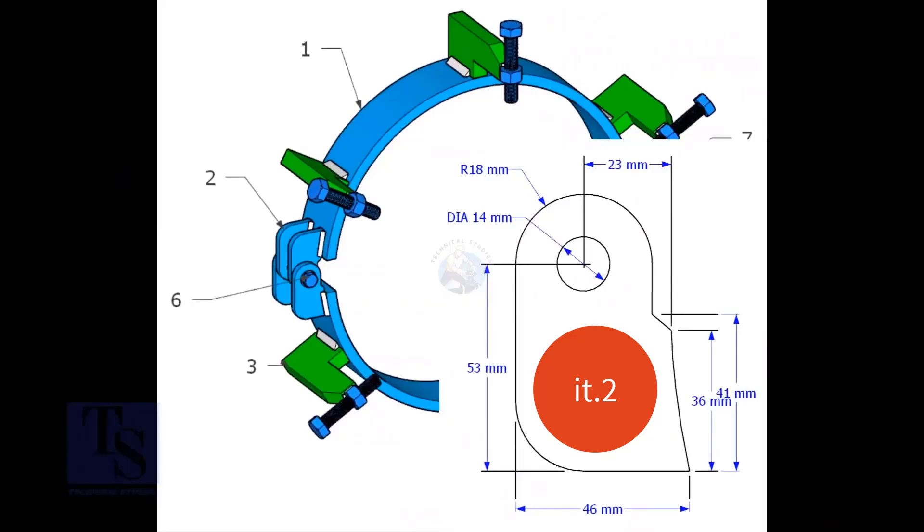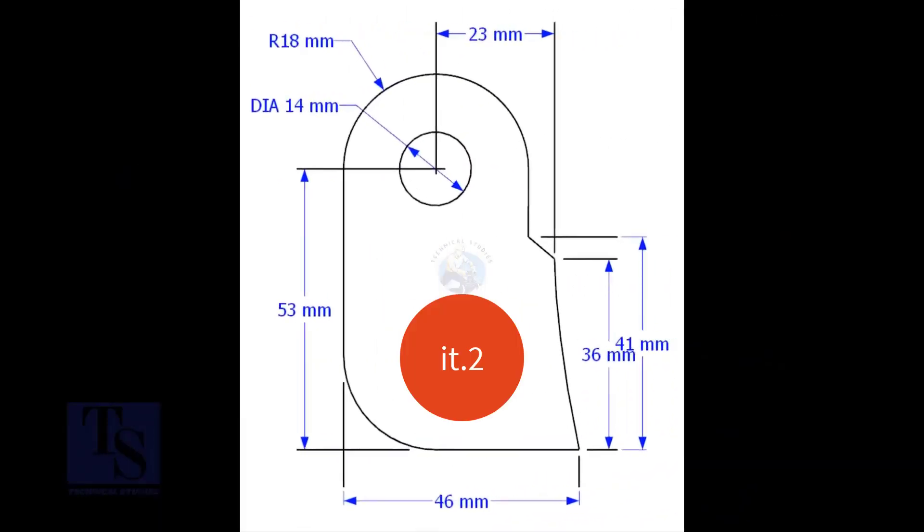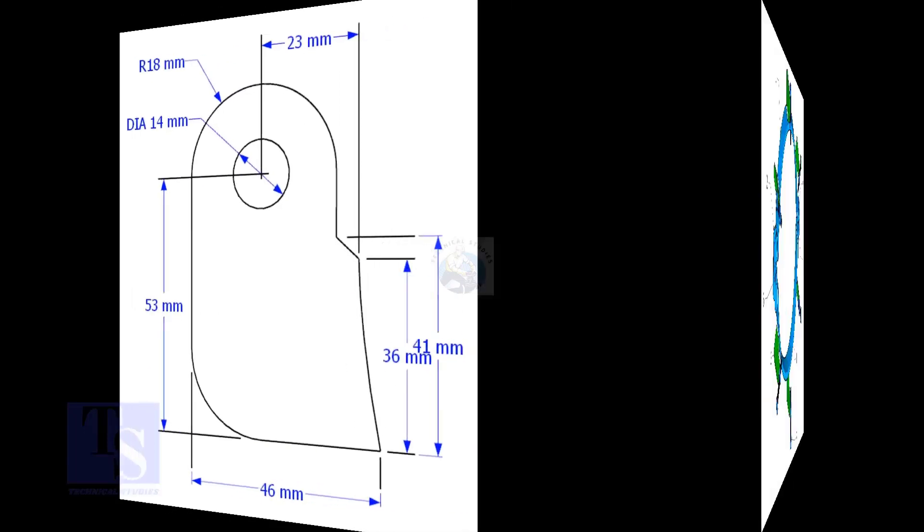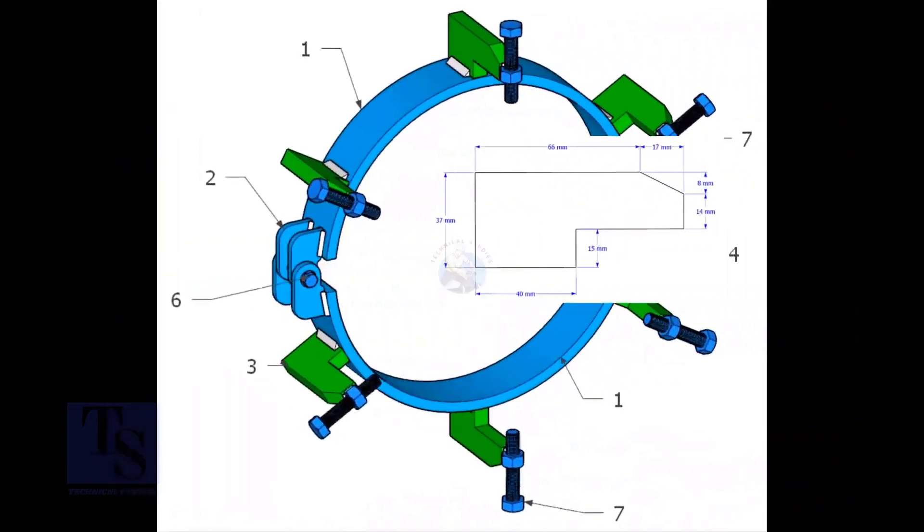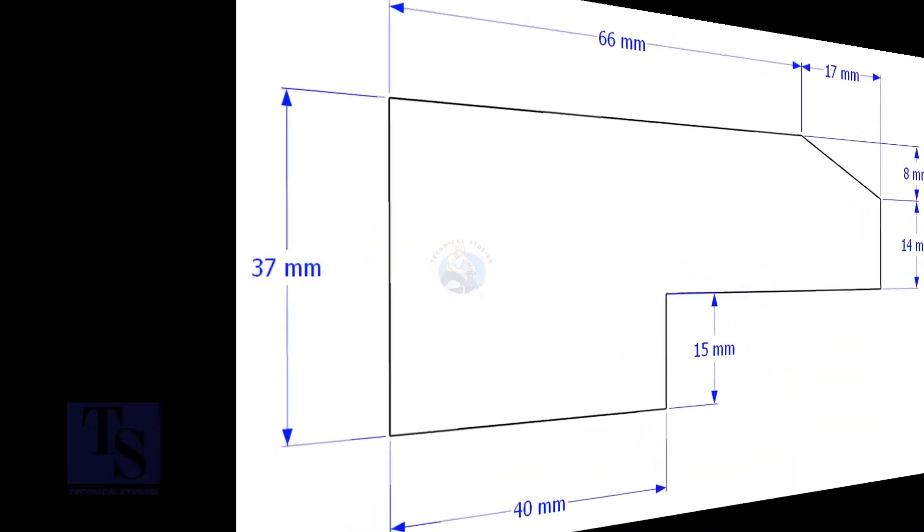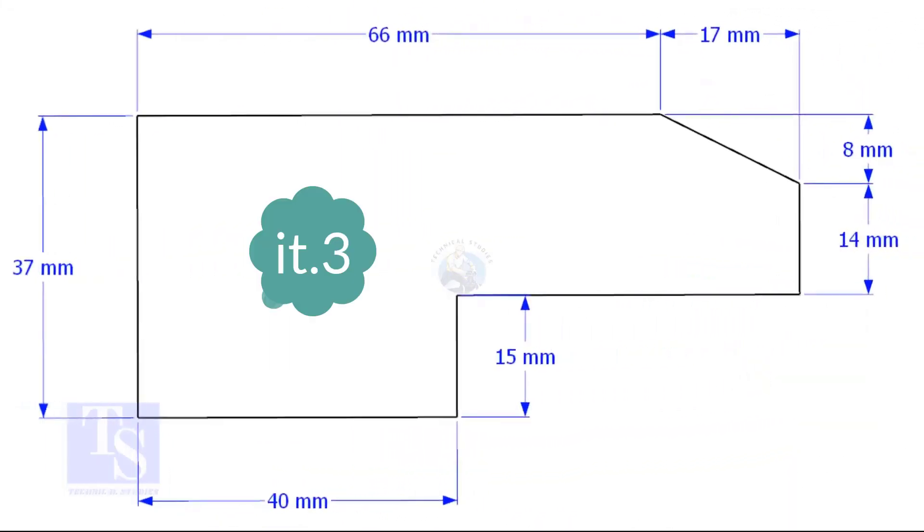Cut item number 2 from 8 or 10-millimeter thick plate. You will need four pieces of this item. Cut item number 3 from 14 or 16-millimeter thick plate. Prepare six pieces in total.